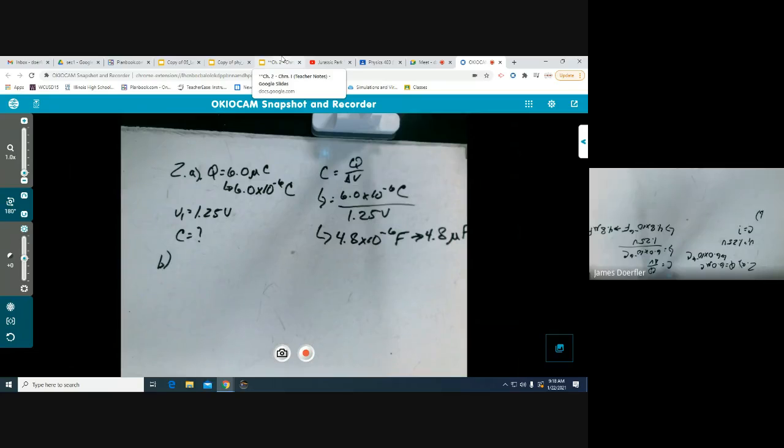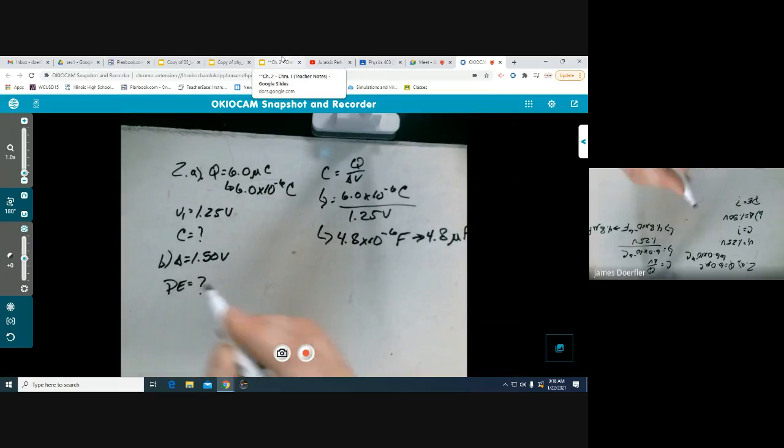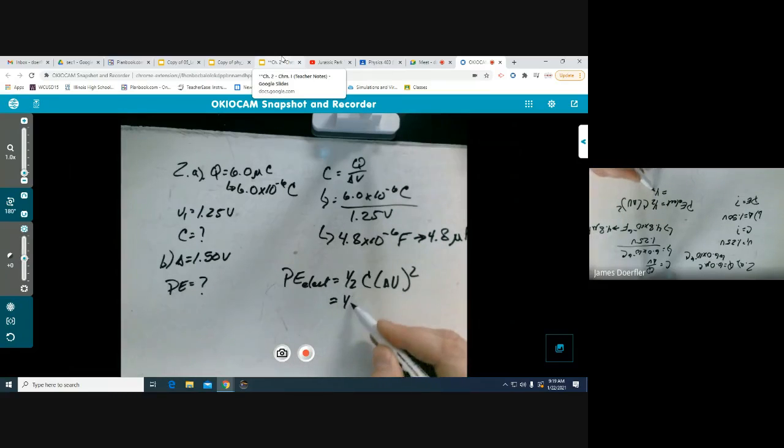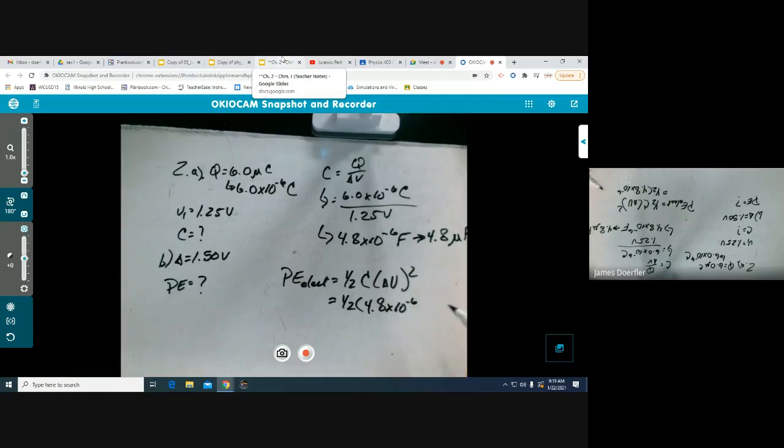Part B says how much electrical potential energy is stored when the capacitor is connected to a 1.5 volt battery? Okay, so just adding a little bit of information we have 1.50 volt battery this time and so we're also going to be checking for the PE. So using what I have I'm just going to go ahead and do the tried and true one half C times delta V squared. So one half times, oh I lost my place, I lost my place. There it is: 4.8 times 10 to the negative 6 farad times 1.5 volts squared. This time I want you to calculate this and tell me what you get.